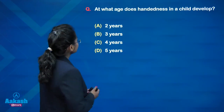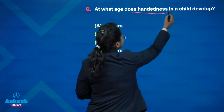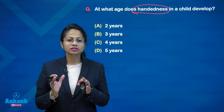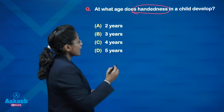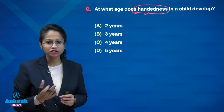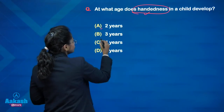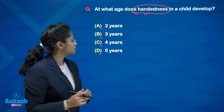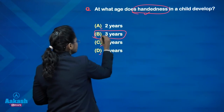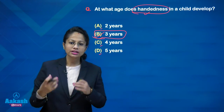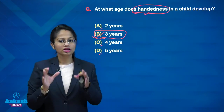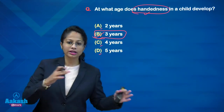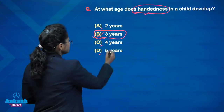Question number one: at what age does handedness in a child develop? This is a direct question we have discussed in child development. The options are 2 years, 3 years, 4 years, and 5 years. You all must know that handedness develops by 3 years of age, so the answer is B. It means the child is left-handed or right-handed by 3 years. By 4 years of age, the child has discrimination of left and right sides.